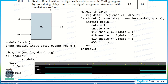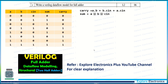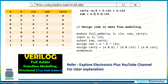Realize a D latch with active-high enable and write the Verilog program considering delay time in the signal assignment statement with simulation waveform. In the D latch, the D input is assigned to Q when enable is equal to one. In the testbench you can see the delay is given — this shows how signal assignment delay can be applied. Writing the corresponding waveform will be sufficient for eight marks.